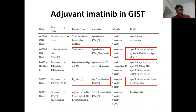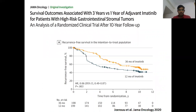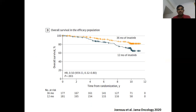After stopping imatinib at three years, the majority of recurrences happened in both the one-year and three-year arms, suggesting greater duration might give better results. A Scandinavian trial is ongoing comparing three years versus five years, and a French trial will compare three years versus six years. Long-term outcomes at 10 years of follow-up show recurrence-free survival is almost 50% in the 36-month arm compared to around 40% in the 12-month arm, and overall survival benefit is 80% versus 65% — a significant improvement.